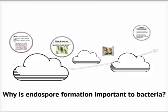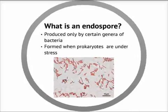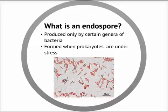Hey guys, so today I'm going to be talking about endospores and why their formation is important to bacteria. Just to quickly review, an endospore is a dormant, tough body that is only produced by a certain genera of bacteria. They're formed when prokaryotes are under stress from UV radiation, high temperatures, or harsh chemicals. In the picture here, the endospores are the small, blue-green shapes scattered about.